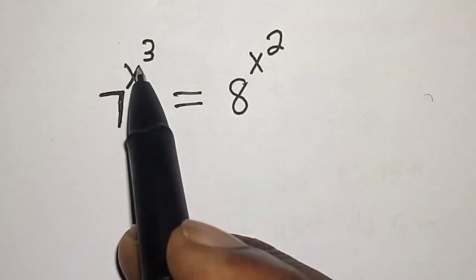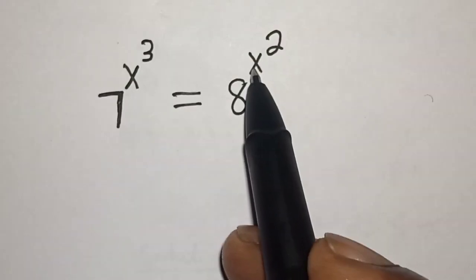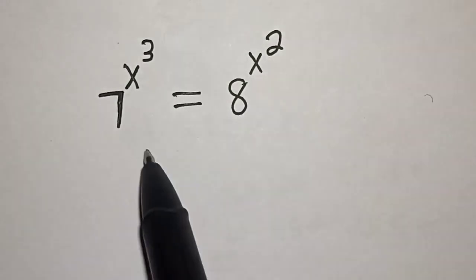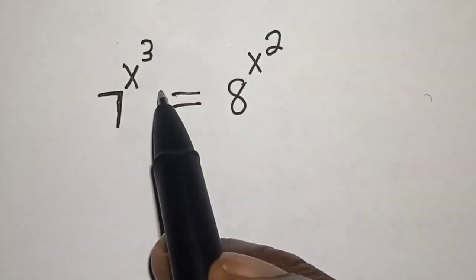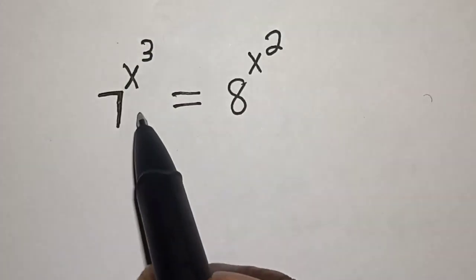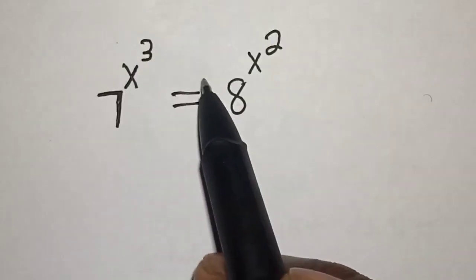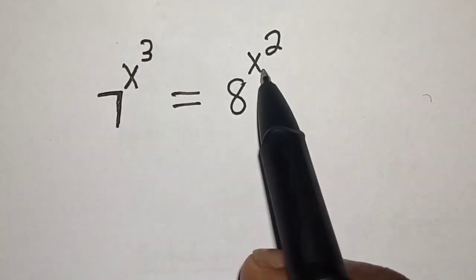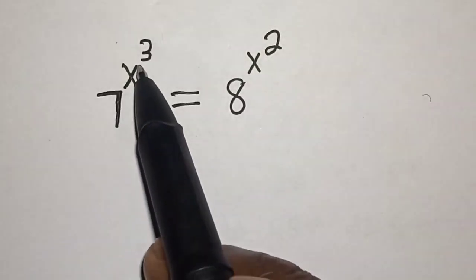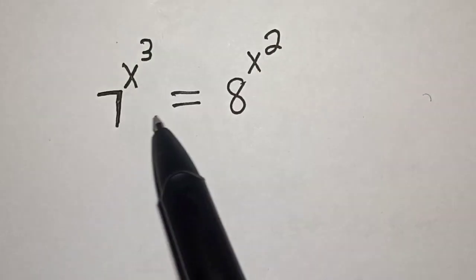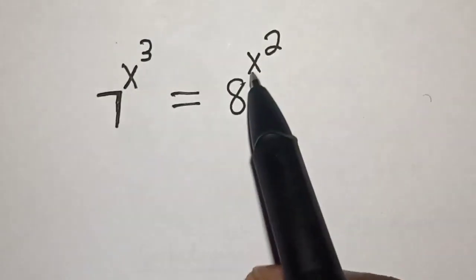7 raised to power s cubed is equal to 8 raised to power s squared. What is the value of s? Welcome to Magist. In this class we want to find the value of s from this equation: 7 raised to power s cubed is equal to 8 raised to power s squared.